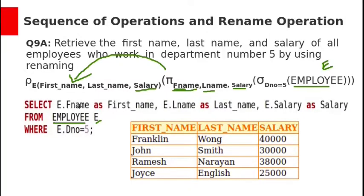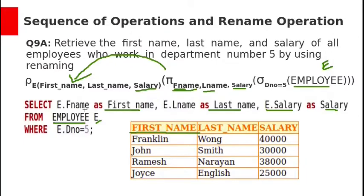The equivalent SQL query will rename employee with e and rename fname, lname, and salary with first_name, last_name, and salary. So: SELECT e.fname AS first_name, e.lname AS last_name, e.salary AS salary FROM employee e WHERE e.dnum = 5. The result will show attribute names changed to the new names: first_name and last_name.